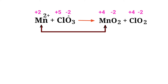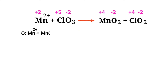In this equation, Manganese has a charge of plus 2 and it is changing to plus 4, so Manganese is being oxidized. Chlorine has a charge of plus 5 and it is changing to plus 4, so Chlorine is being reduced.